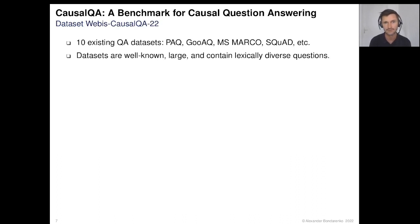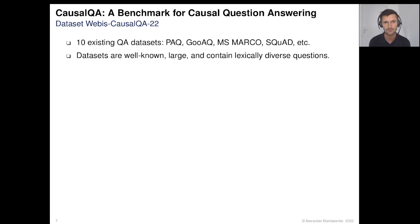Let me start with the dataset construction. To build our causal question answering dataset, we first selected 10 existing QA datasets that fulfill three criteria. First, we wanted datasets that are well known — for example, mentioned in review papers in the field. Second, we wanted relatively large datasets, so all selected datasets contain more than 100,000 QA pairs. And finally, we wanted datasets to have lexically diverse questions — for example, not just 'why' questions.